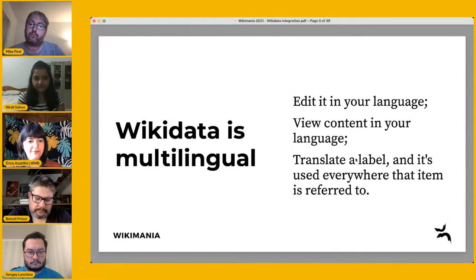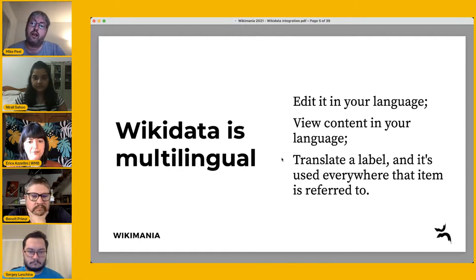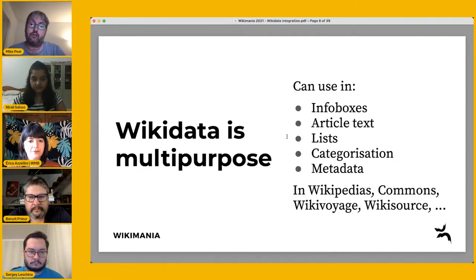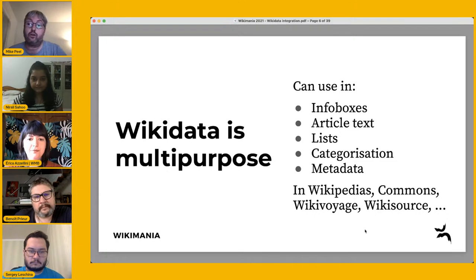One of the most important things about Wikidata is it's multilingual — you can edit in your language, view content in your language, and translate a single label that's used everywhere that item is referred to. It's an incredibly powerful tool for making content available in a multilingual way across all the different Wikimedia projects. From a Wikimedia projects perspective, it can be used in infoboxes, article text, lists, categorization, and metadata like interwiki links — in Wikipedia, Commons, Wikivoyage, Wikisource, and all the different projects.